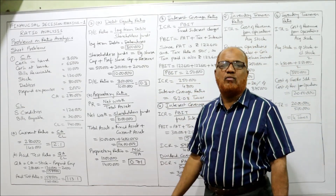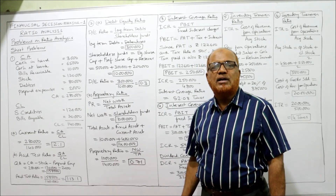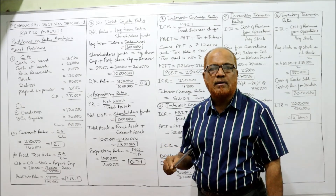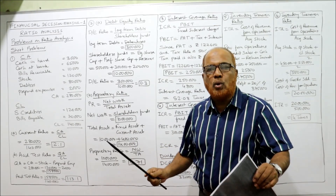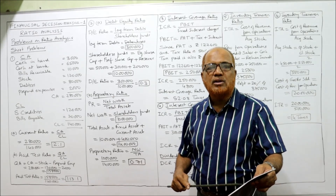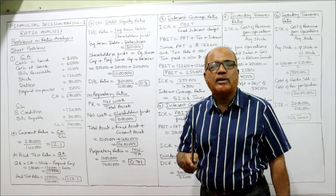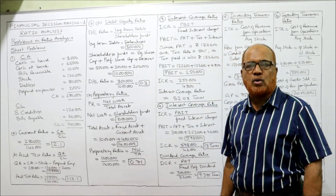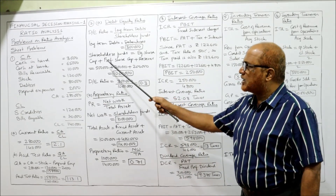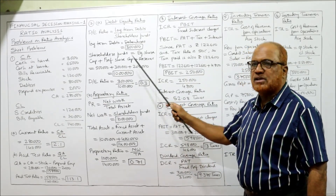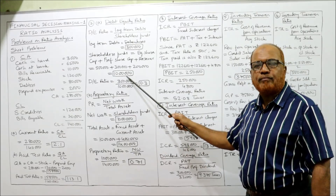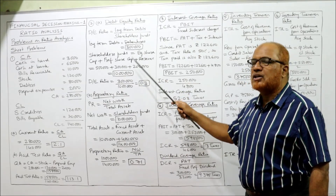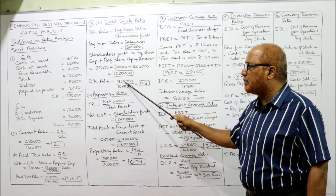Now we require shareholders fund. The formula is: equity share capital plus preference share capital plus reserves minus fictitious assets. We have no fictitious assets, so we add only three items: 5 lakh plus 3 lakh plus 2 lakh equals 10 lakh as shareholders fund. Long term debt is 3 lakh, shareholders fund is 10 lakh. So 3 lakh divided by 10 lakh equals 0.3.